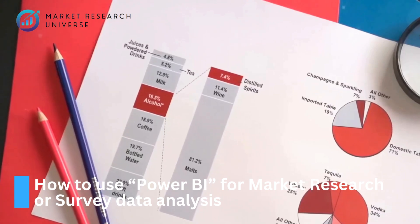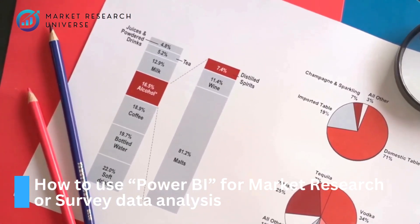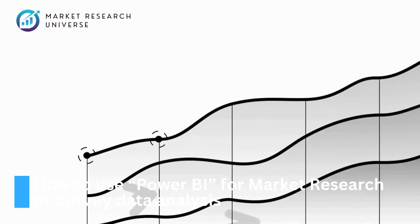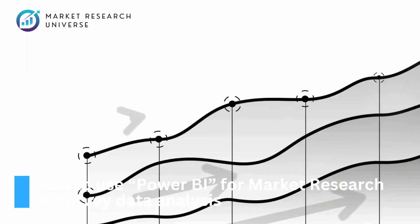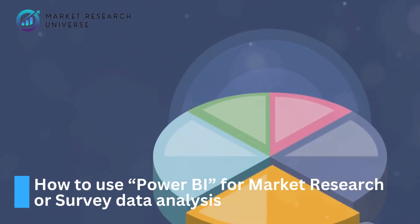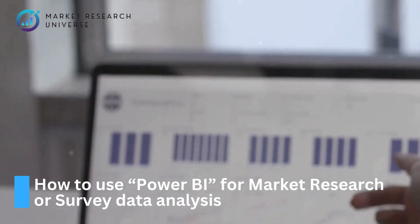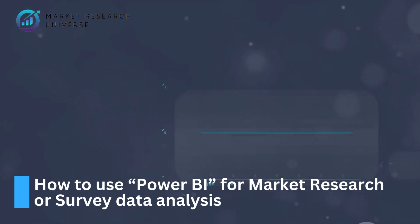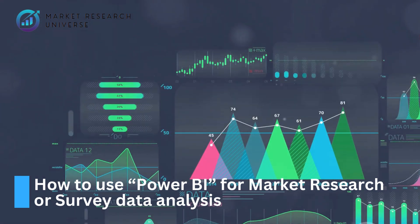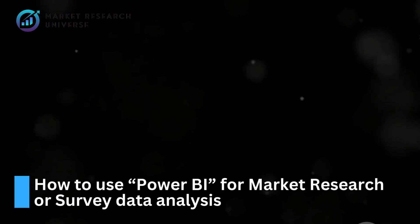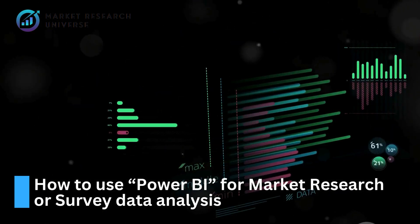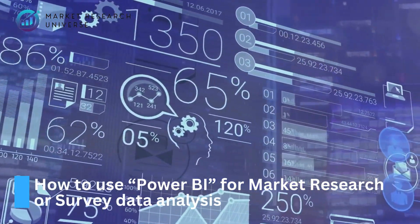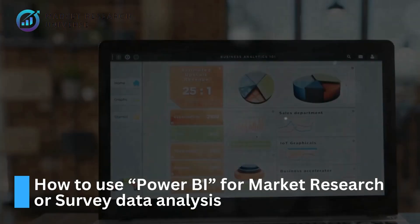Bar charts are excellent for comparing categories. Line charts are ideal for showing trends over time. Pie charts help us understand proportions, and scatter plots reveal relationships between variables. Power BI allows us to customize our visuals extensively — we can change colors, fonts, labels, and more. The key is to choose visuals that are clear, concise, and insightful.